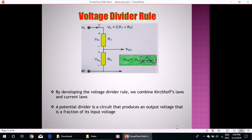Voltage divider rule. By developing the voltage divider rule, we combine Kirchhoff's laws and current laws. A potential divider is a circuit that produces an output voltage that is a fraction of its input voltage. This is input voltage, this is output voltage across R2. So, it is a fraction of the input voltage. Now, the concept behind Kirchhoff voltage law is the law of conservation of voltage and is particularly useful when we deal with series circuits.